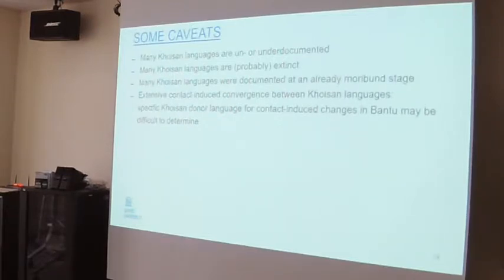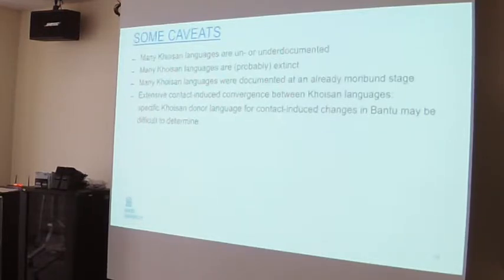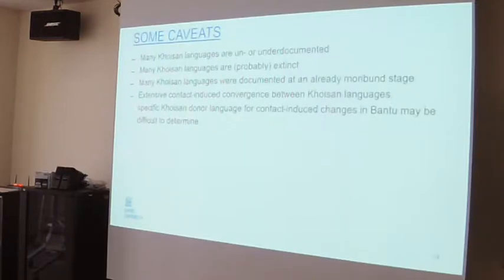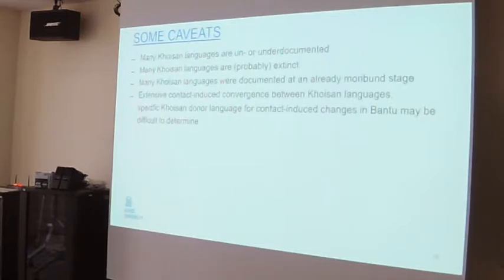What also makes it difficult is that many Khoisan languages that were documented, even though they are extinct now, were documented at the stage when they were already at the verge of dying out. One of the remarks many linguists made studying Khoisan languages in the early 20th century is that Khoisan languages are very imprecise and have a lot of phonological variation — with all sorts of racist overtones. But what we know now is that this is not a typical feature of Khoisan languages; it is a typical feature of a language at the verge of extinction. So even what we know about extinct Khoisan languages is not necessarily very reliable.